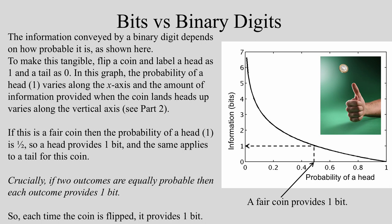Crucially, if two outcomes are equally probable, then each outcome provides one bit of information, so each time the coin is flipped it provides one bit.